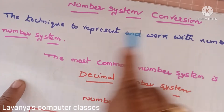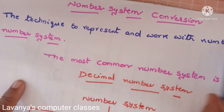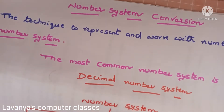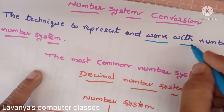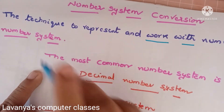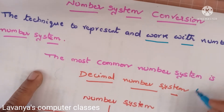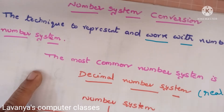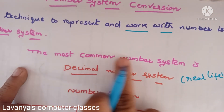Number system — the technique to represent and work with numbers is called a number system. Whatever work is done using numbers, that is called a number system. The most common number system is the decimal number system. In our real life, whatever numbers we use, everything belongs to the decimal number system.